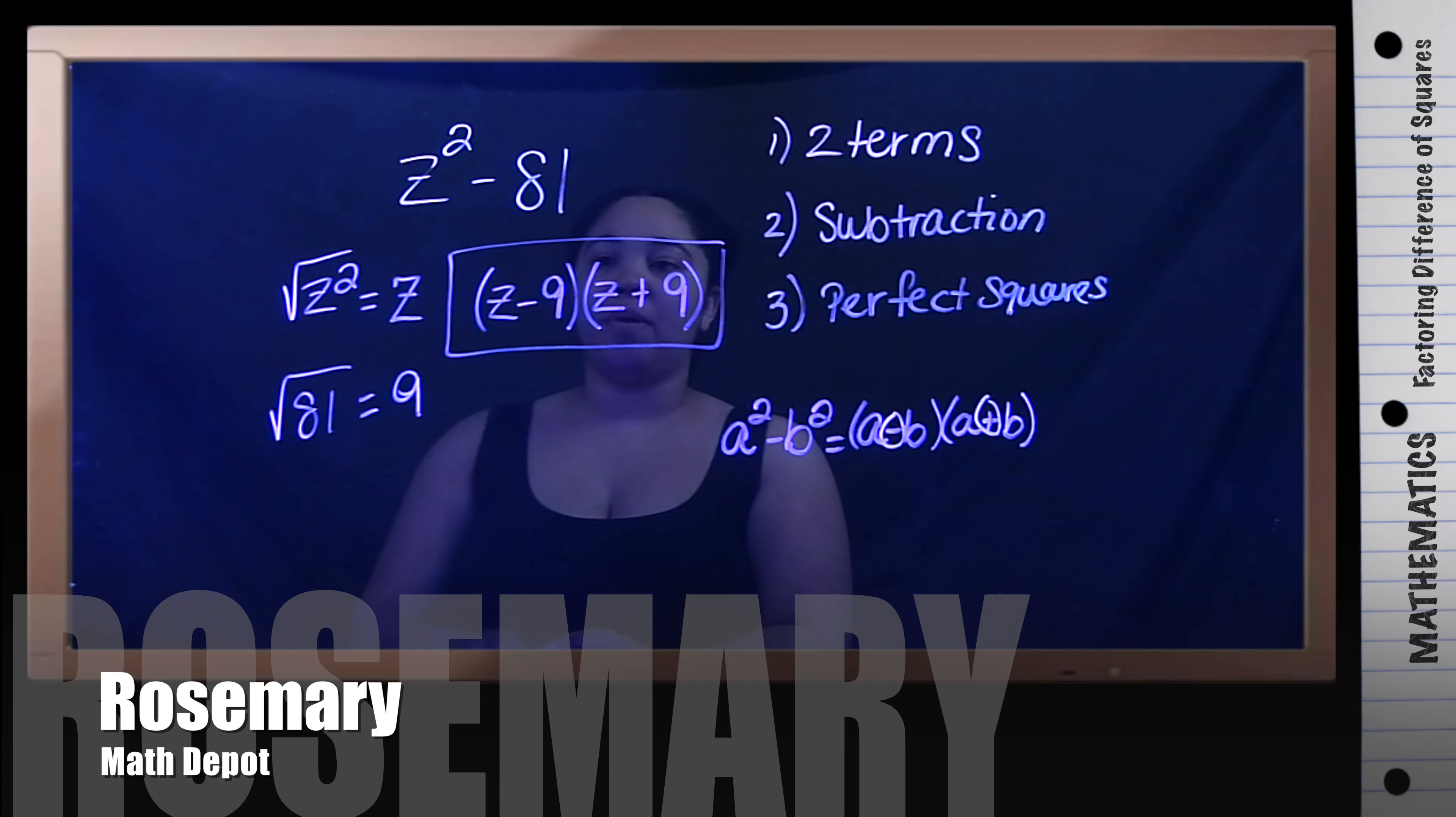So your answer to this problem is z minus 9 times z plus 9. And there you have it.